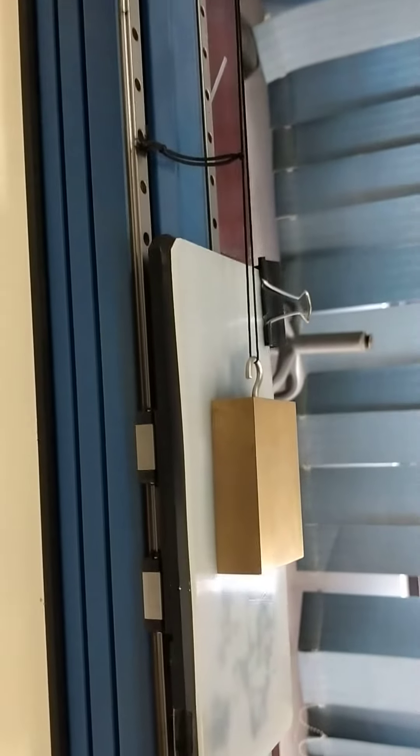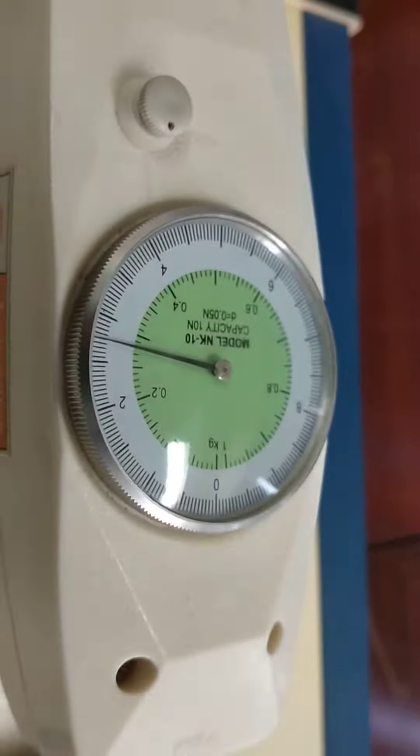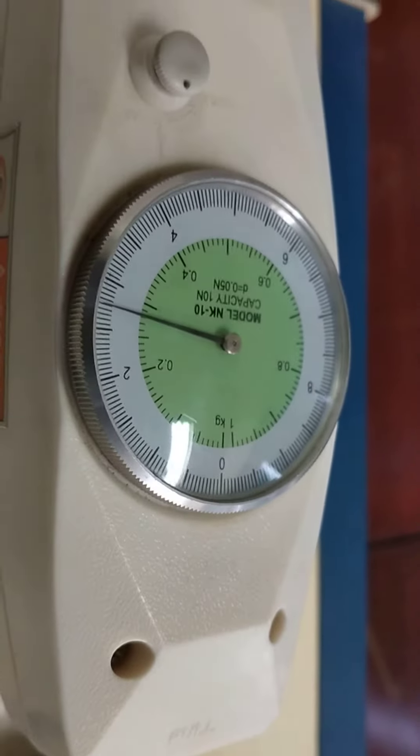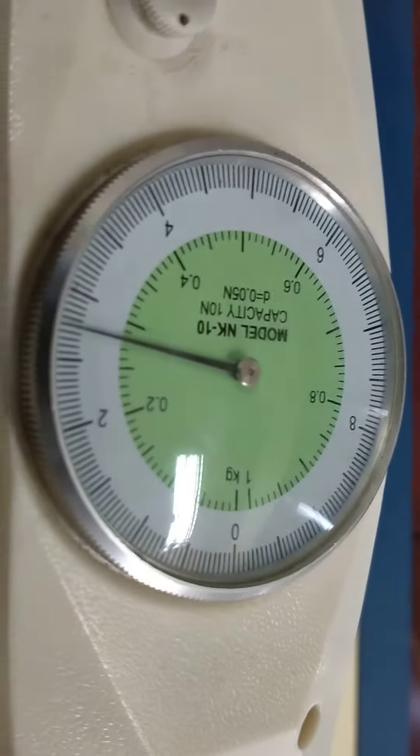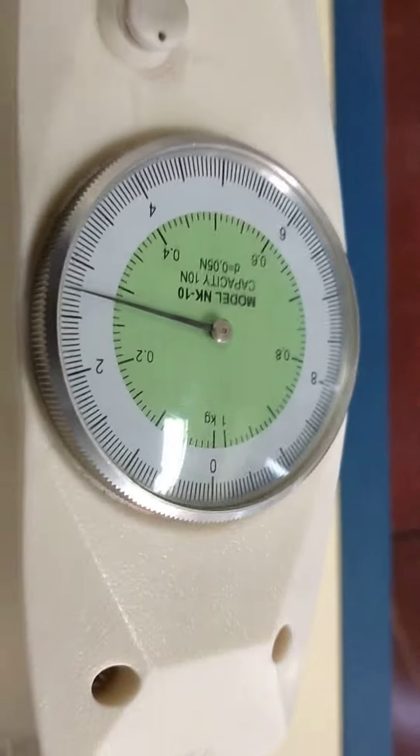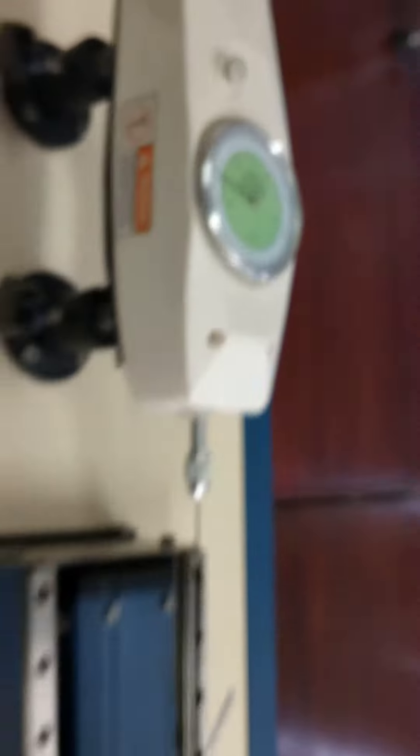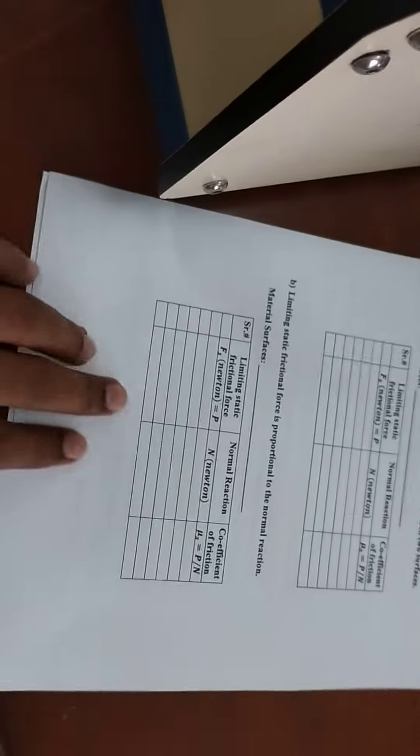And the block has started to slide. So at that value, I would note this value. This one is one complete revolution, and after that it's approximately again at 55 division. So that's the first reading to note down.